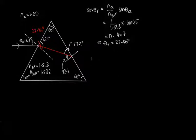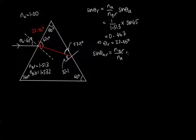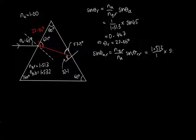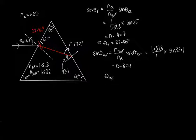Now we can work out the angle as the red light leaves the prism. The angle in air for red light equals N_glass(red) over N_air times sine θ, where the internal angle is 32.1 degrees. Substituting in: 1.513 over 1 times sine 32.1 equals 0.804. So θ_Ar equals 53.5 degrees.